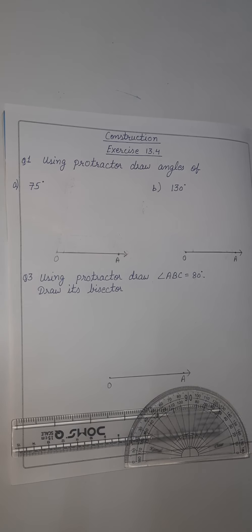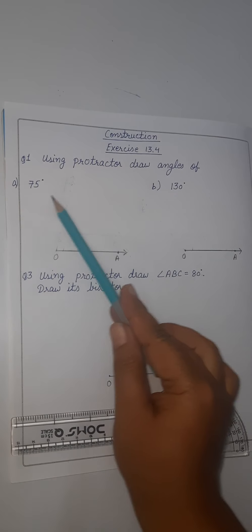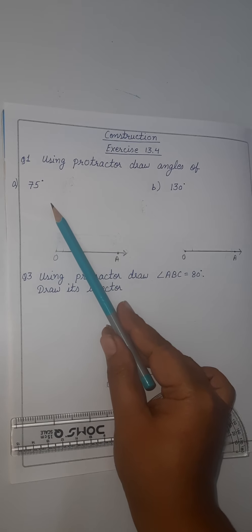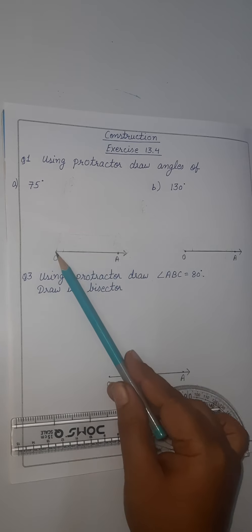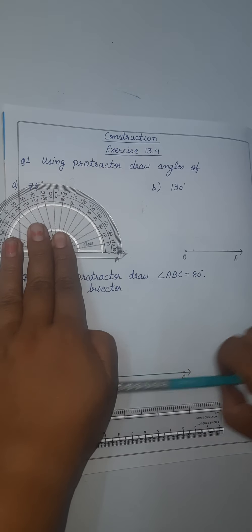Good morning children, we are starting Exercise 13.4. The first question is to draw angles using a protractor. First we have to draw 75 degrees, which is an acute angle. For that, I have drawn a ray OA. Now we have to place the protractor with its midpoint at point O, and the 0-180 degree line coincides with OA.